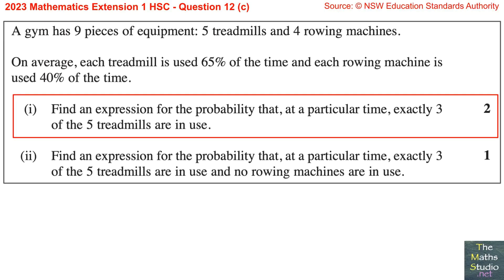Question 12, Part C. A gym has nine pieces of equipment: five treadmills and four rowing machines. On average, each treadmill is used 65% of the time and each rowing machine is used 40% of the time.